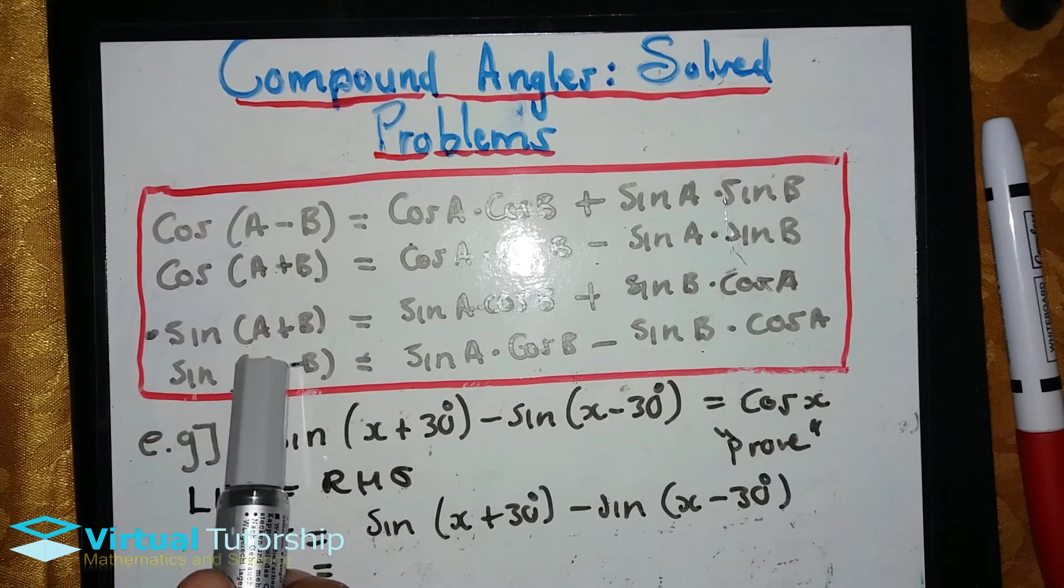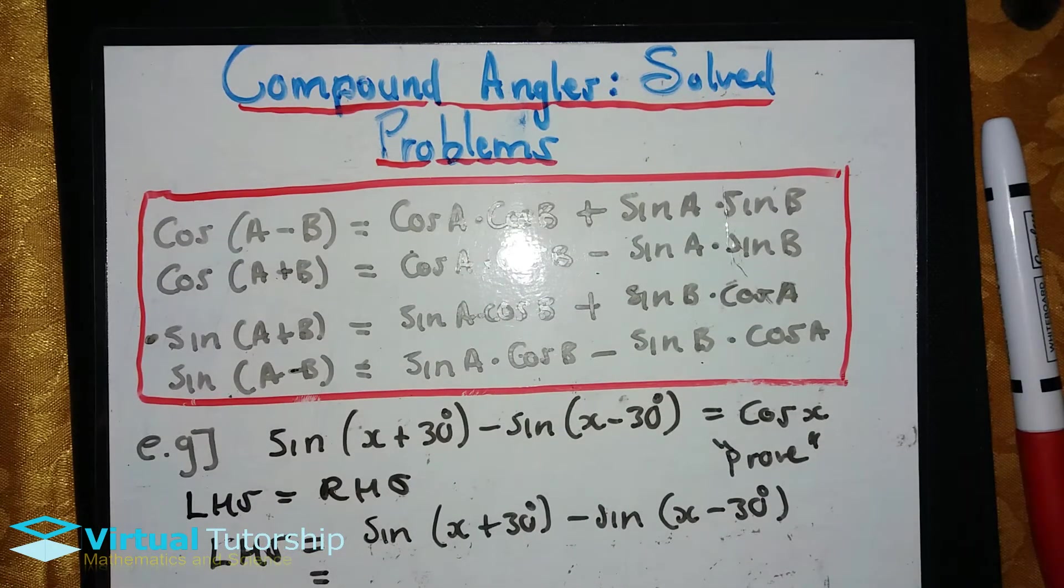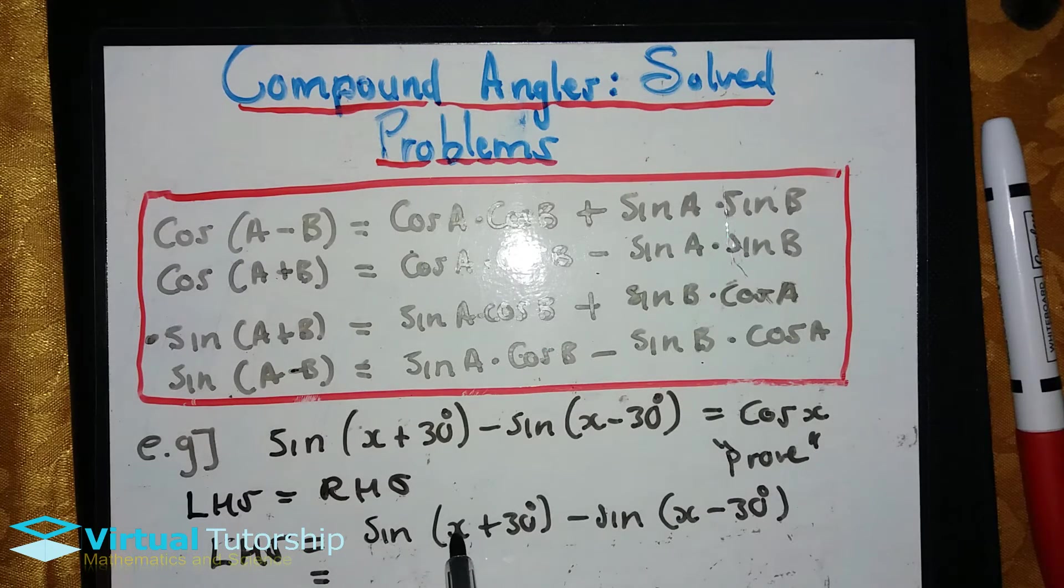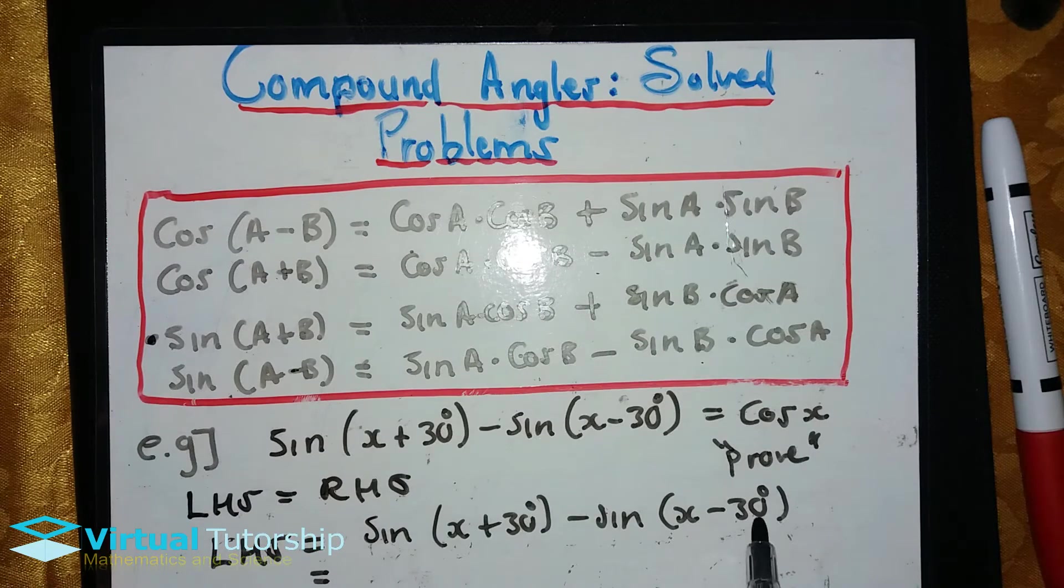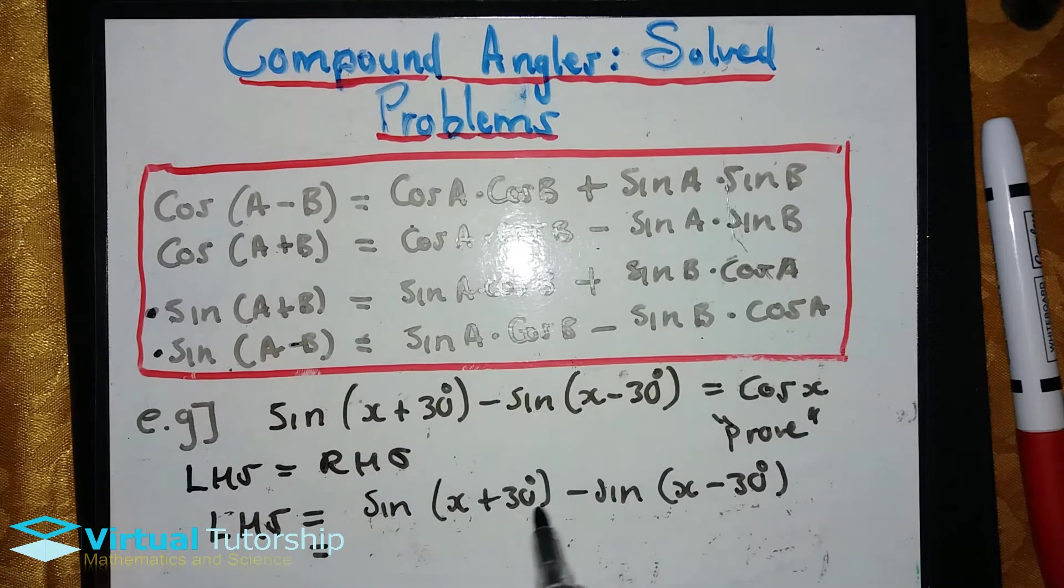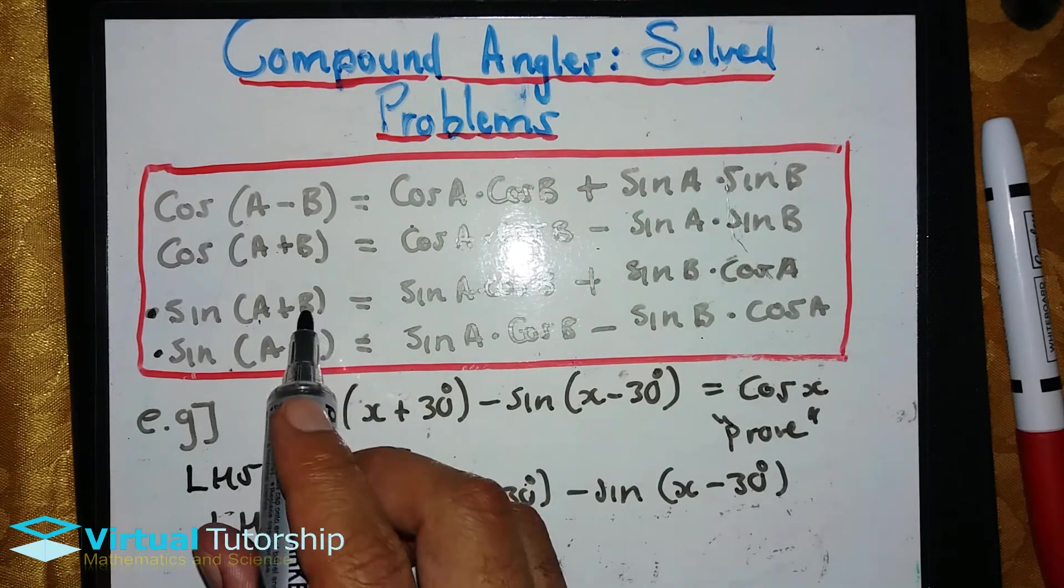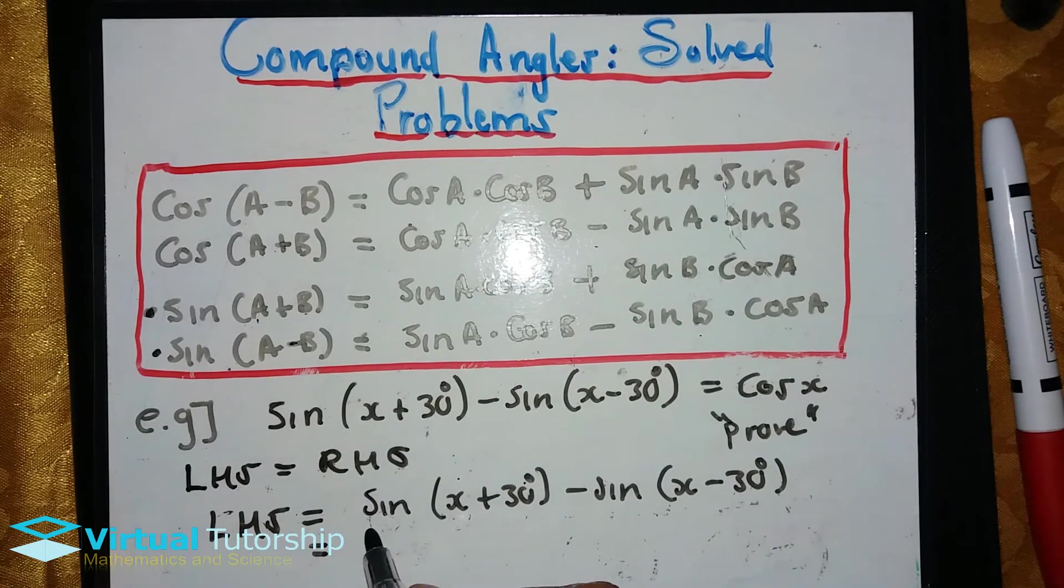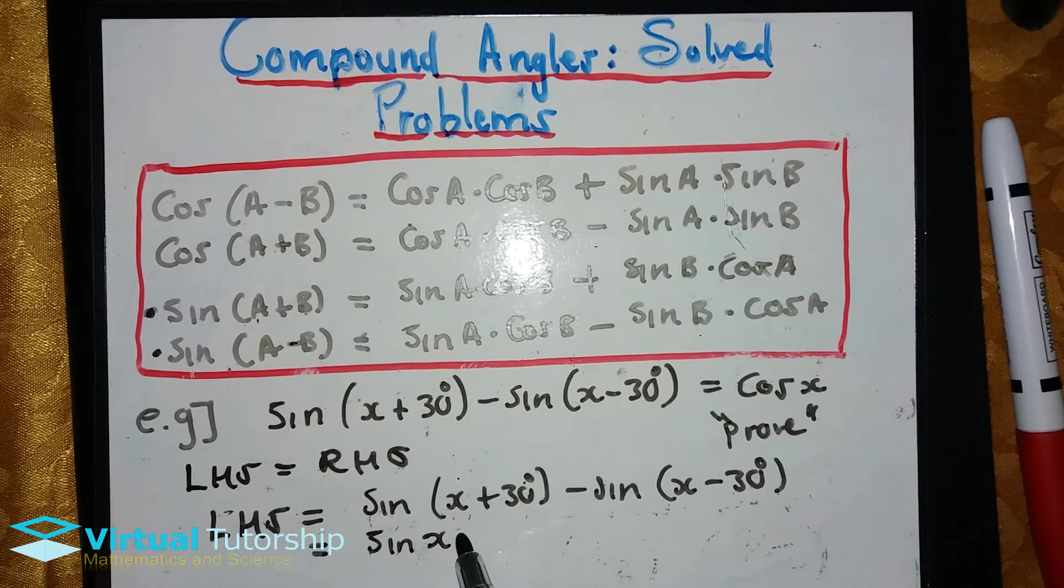In this case, I have sine x plus 30. So I'll work in the forward direction using the compound angle. So I will apply: x acts as A and 30 degrees acts as B. So the identity is the compound angle we'll solve.